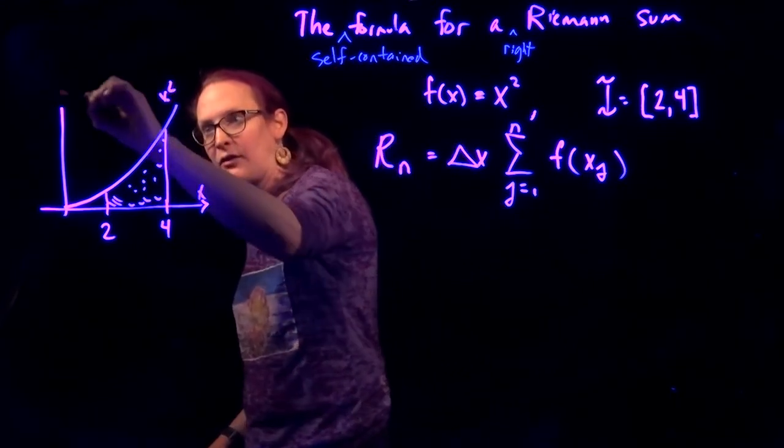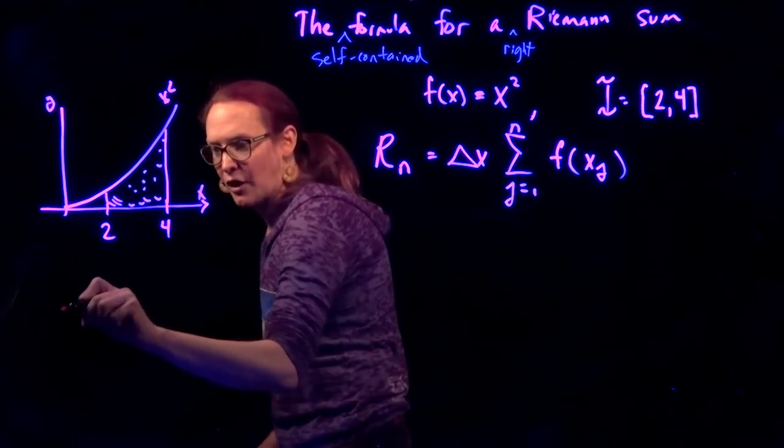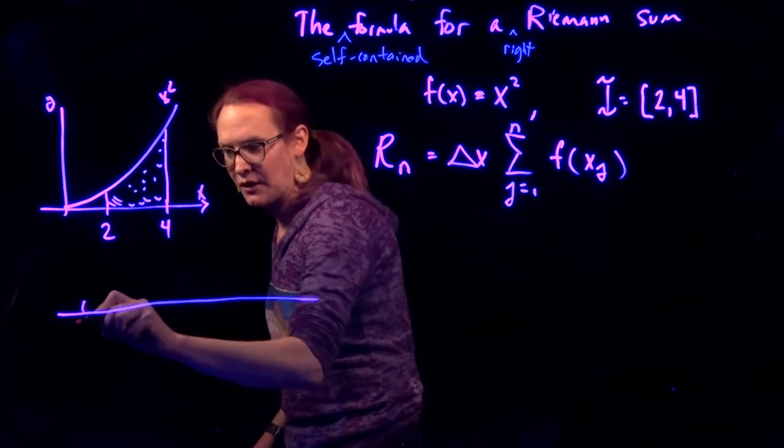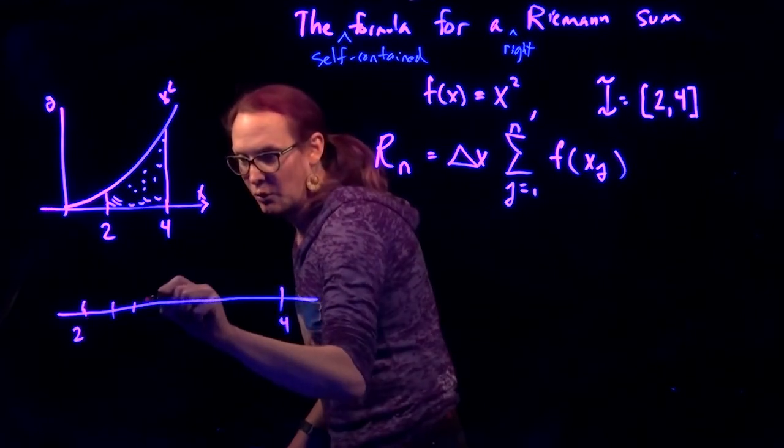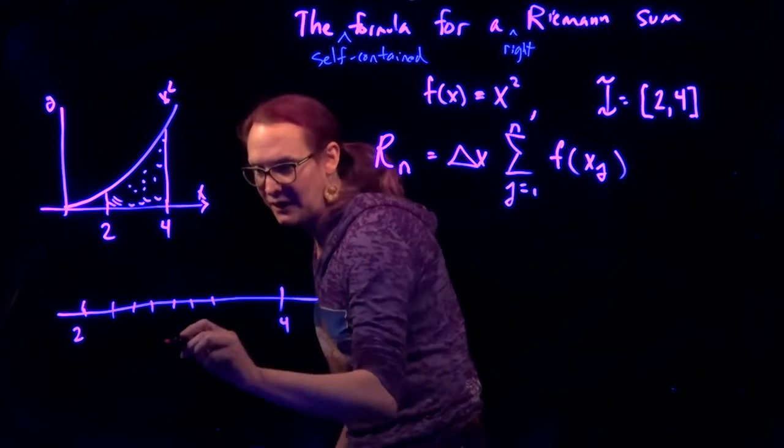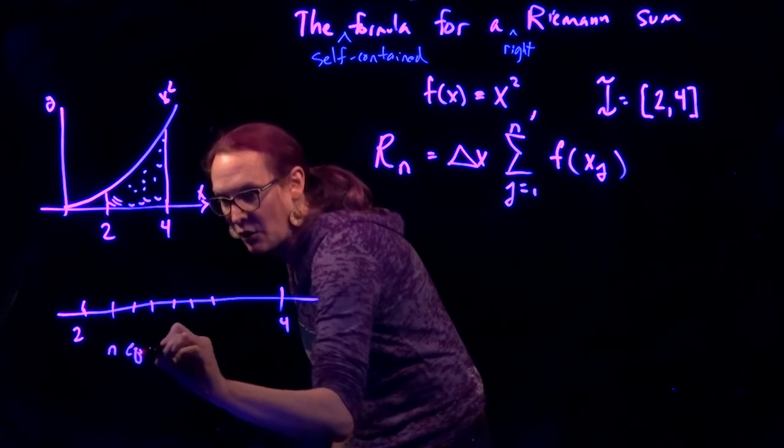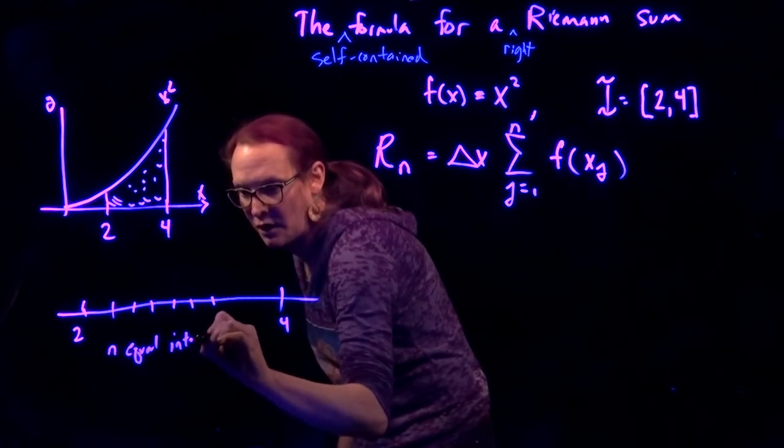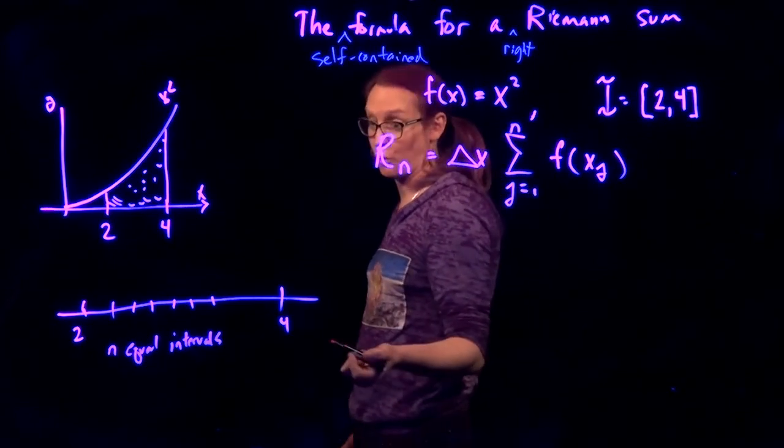That's x squared. So we've partitioned the interval from 2 to 4 into n equal pieces, n equal intervals, because we're taking uniform partition because it's easier to work with.